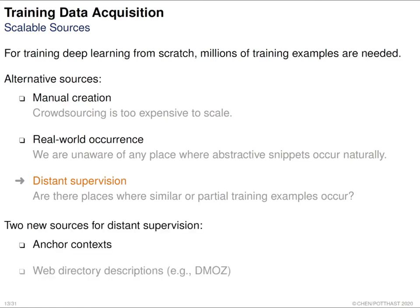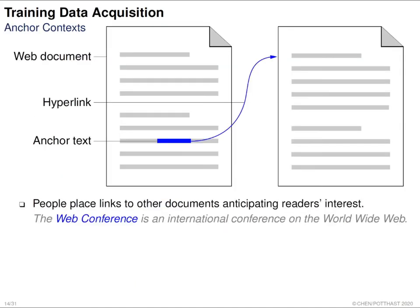So we use the following two resources for our distant supervision. The first one is anchor context, and the second one is the web directory description. Due to time limits, I will only explain the first one.